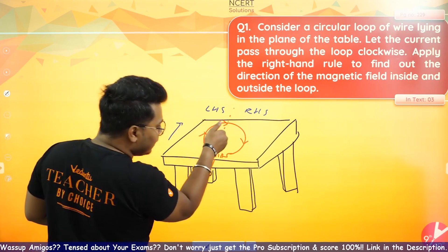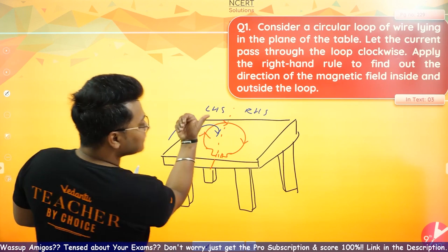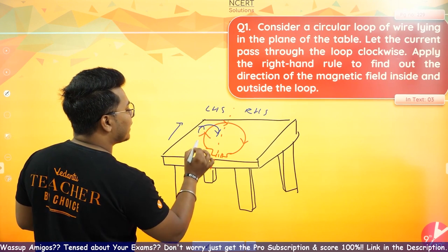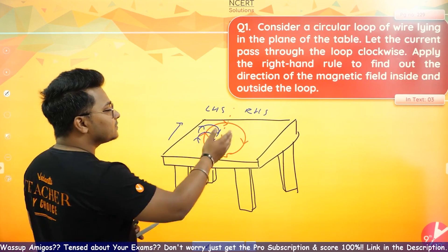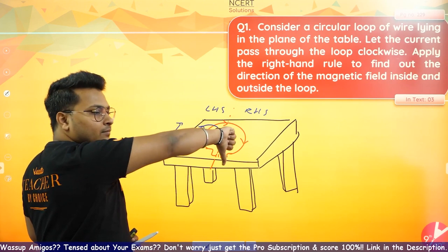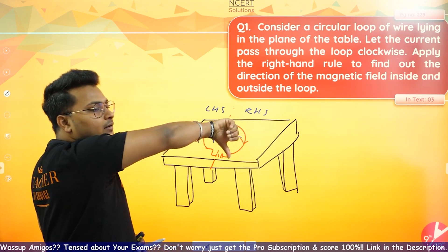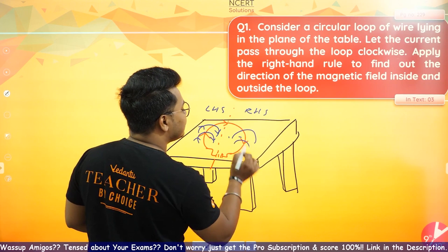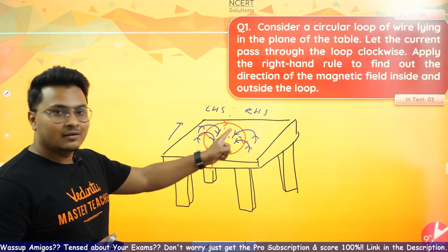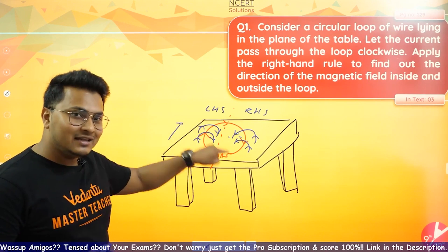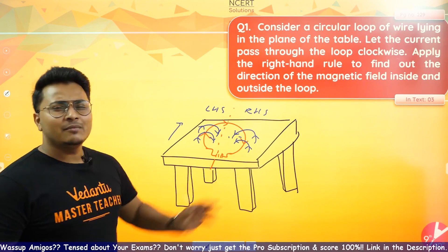You can see very clearly that my fingers are going in the circle. So you can see that the magnetic field direction is clear. Inside the circle, the magnetic field goes inside the plane of the paper or inside the loop, and outside the circle, the magnetic field lines come out of the circle or out of the plane of the paper.